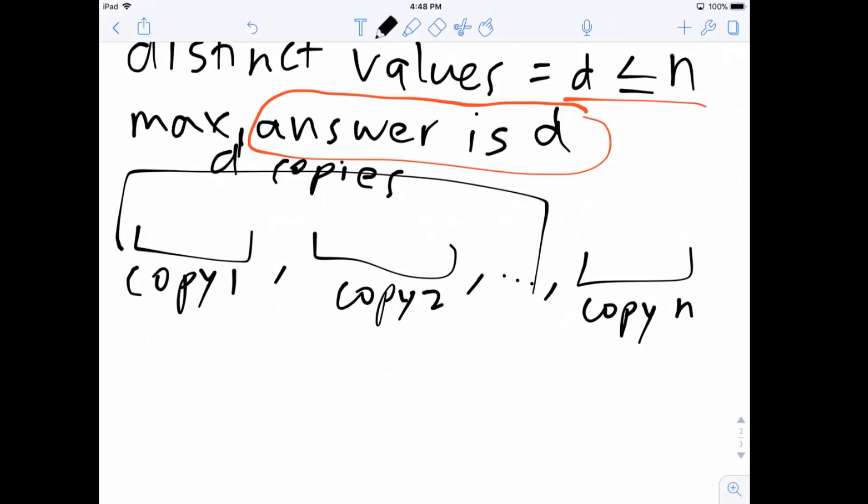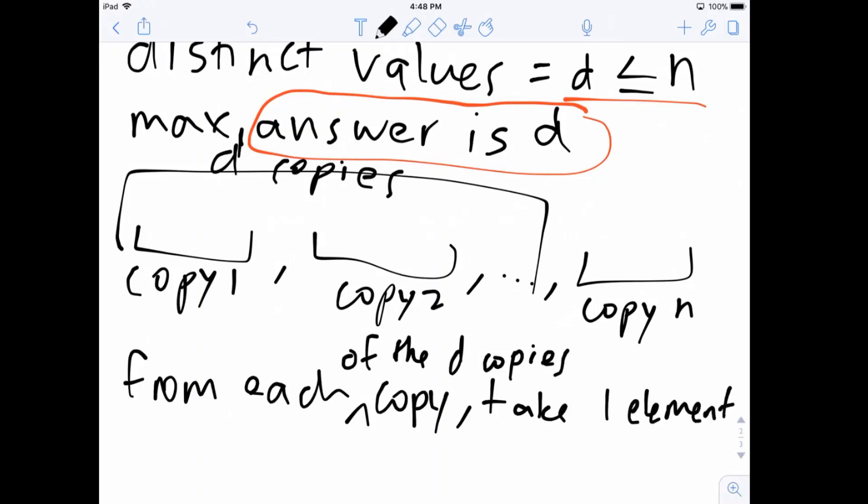I'll write a little more clearly. From each of the D copies, not all of the n copies, we can take one element. So from the smallest copy, we'll take copy one. We take the smallest. Copy two, we take the second smallest. Copy three, we take the third smallest and so on and so forth. And so then we'll take a total of D elements. And the answer is D.